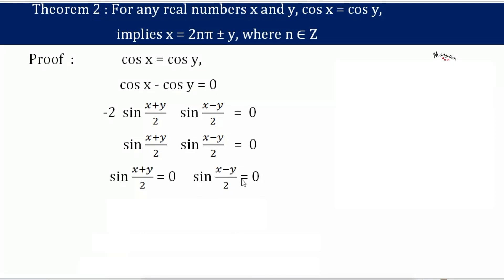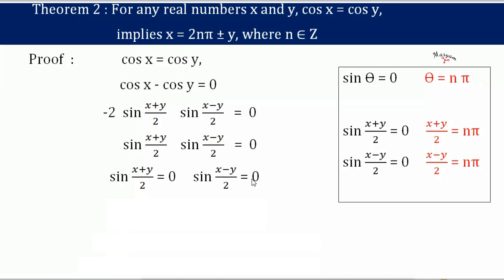Both sin((x+y)/2) equals 0 and sin((x−y)/2) equals 0 are in the form sin θ equals 0. For sin θ equals 0, we have the relation θ equals nπ. Here θ is (x+y)/2 for the first equation and θ is (x−y)/2 for the second.